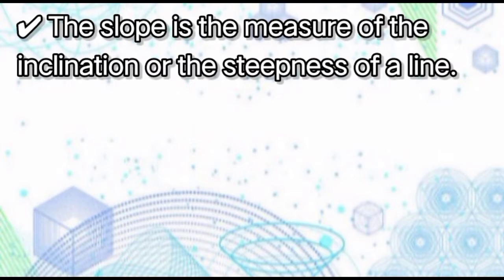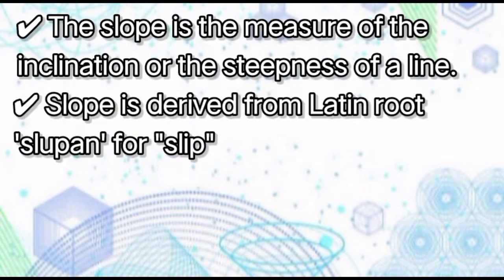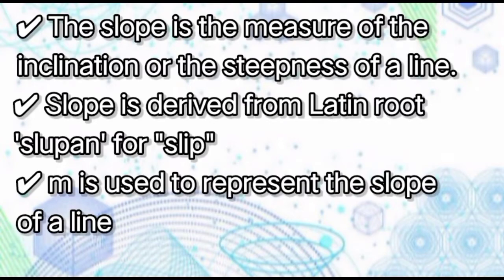The slope is the measure of the inclination or the stiffness of a line. Slope is derived from the Latin root 'slupan' for slip. The term somehow connotes the level or ground slipping away as you go forward. M is used to represent the slope of a line. It is not known why the letter M was chosen for slope. The choice may have been arbitrary.